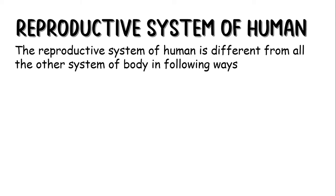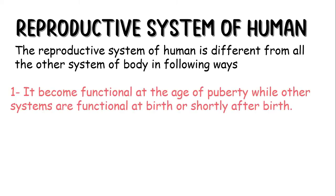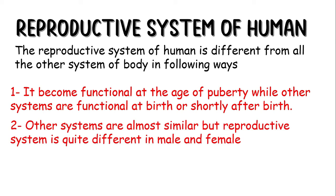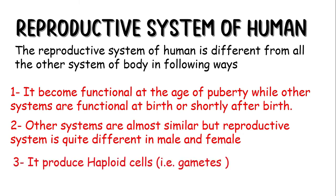The reproductive system of humans is different from all the other systems of the body in the following ways. Number 1: it becomes functional at the age of puberty, while the other systems are functional at birth or shortly after birth. Number 2: other systems are almost similar, but the reproductive system is quite different in males and females. Number 3: it produces haploid cell gametes — in males it produces sperms, while in females it produces egg cells or ova.